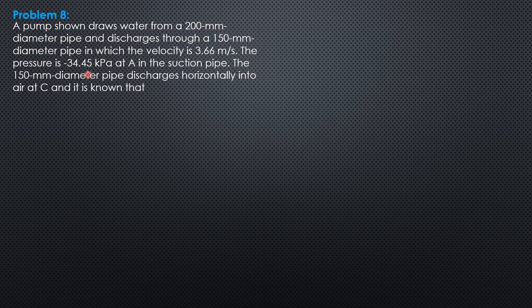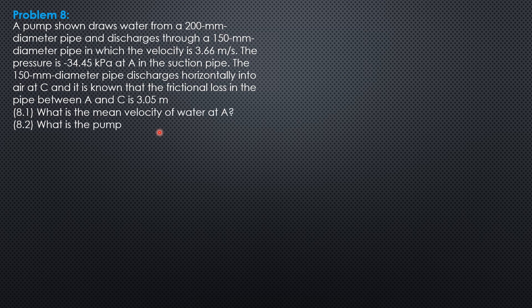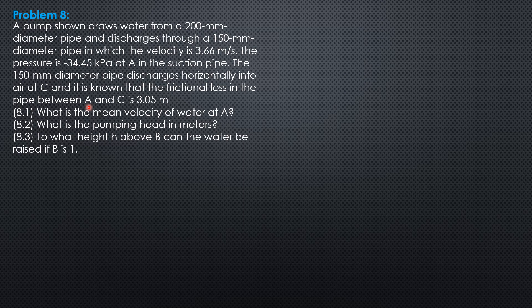The pressure is negative 34.45 kilopascals at A in the suction pipe. The 150mm diameter pipe discharges horizontally into air at C and it is known that the frictional loss in the pipe between A and C is 3.05 meters.